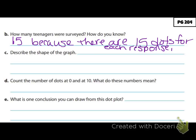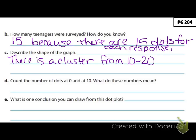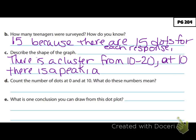C says describe the shape of the graph. We're going to use our vocab from last week — the cluster, the peaks, the outliers, all of that information. If we look at our dot plot, we can see there is a cluster from 10 to 20 on the left-hand side. We can also see that at 10 we have a peak, and at 90 and 100 we have outliers.